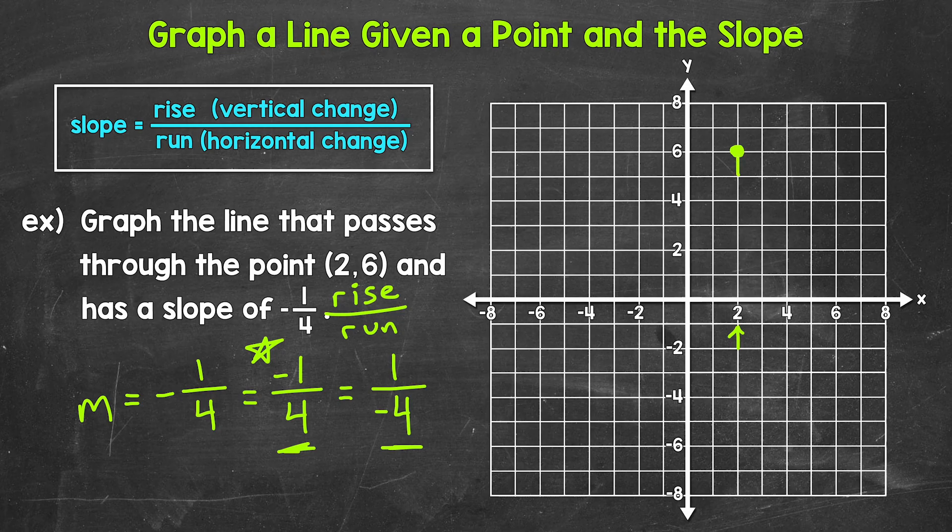And then our run is positive 4. That means we need to go right 4 units. So 1, 2, 3, 4. And we plot our second point.